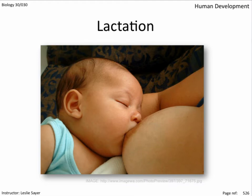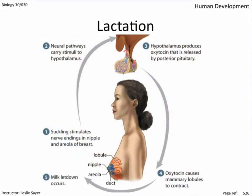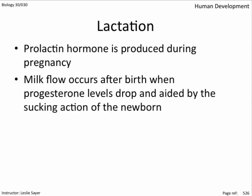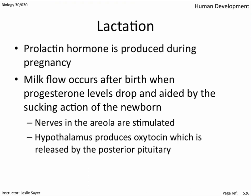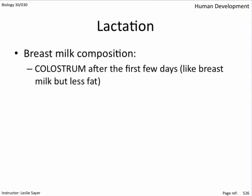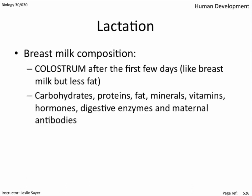The first few days of lactation see the breast produce colostrum — like breast milk but without milk fats. Lactation not only provides a well-balanced diet for the baby but also delivers vitamins, minerals, digestive enzymes, hormones, and maternal antibodies. In summary: prolactin is produced during pregnancy; milk flow occurs after birth when progesterone levels drop, aided by the sucking action of the newborn. Nerve endings in the areola are stimulated, the hypothalamus signals oxytocin release by the posterior pituitary, and the smooth muscle in the breasts weakly contracts to aid milk flow. Colostrum is produced for the first few days following birth.